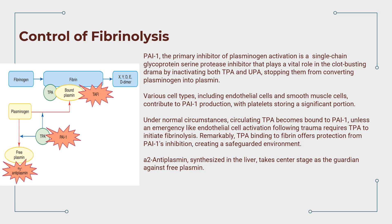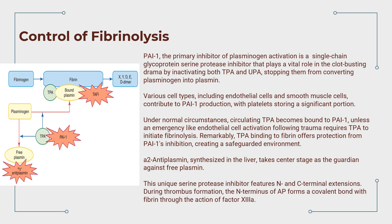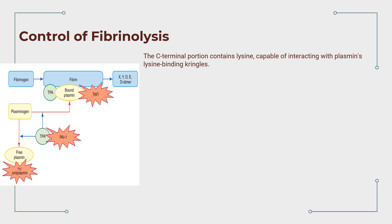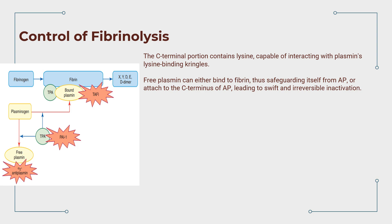Alpha-2-antiplasmin, synthesized in the liver, is the guardian against free plasmin — a unique serine protease inhibitor featuring N- and C-terminal extensions. During thrombus formation, the N-terminus of alpha-2-antiplasmin forms a covalent bond with fibrin through the action of factor XIIIa. The C-terminal portion contains lysine capable of interacting with plasmin's lysine-binding kringles. Free plasmin can either bind to fibrin, safeguarding itself from alpha-2-antiplasmin, or attach to its C-terminus, leading to swift and irreversible inactivation.